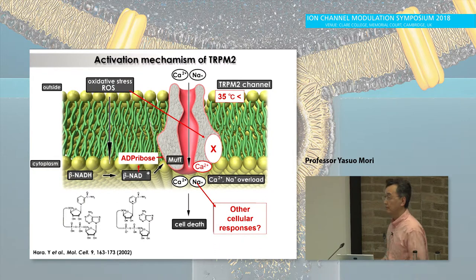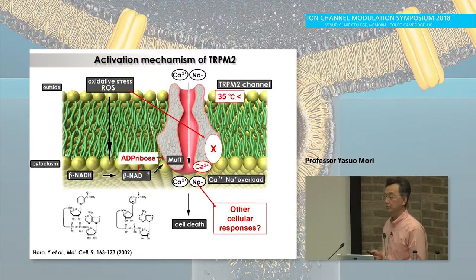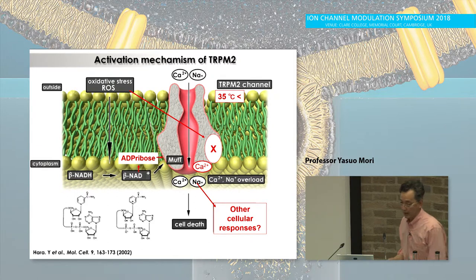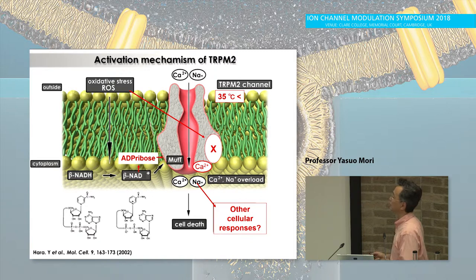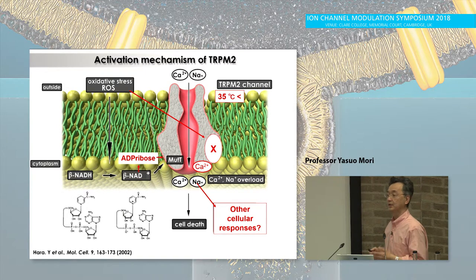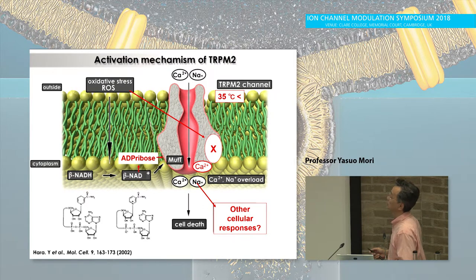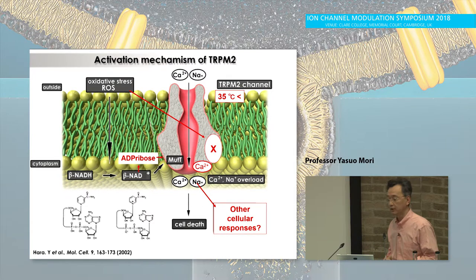We now know there are multiple regulators for the TRPM2 channel, even in response to hydrogen peroxide. Temperature above 35 degrees is essential. Recently, Peter McNaughton's group reported a beautiful paper on warmth sensation. Direct oxidization of the TRPM2 protein itself, and also associated proteins, are very important to upregulate its activity. Calcium permeating through its own ion channel pore is also very important to enhance or optimize TRPM2 activation. We think the most important issue is that this oxidation-sensitive TRPM2 channel is not only important for cell death, but also for multiple cellular responses — in our case, inflammatory cellular responses.